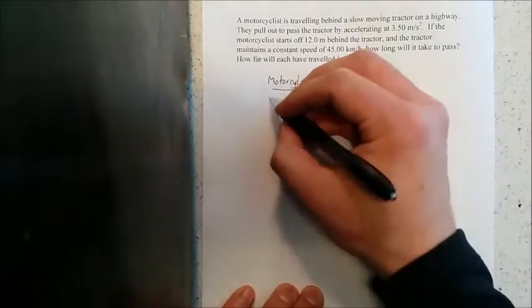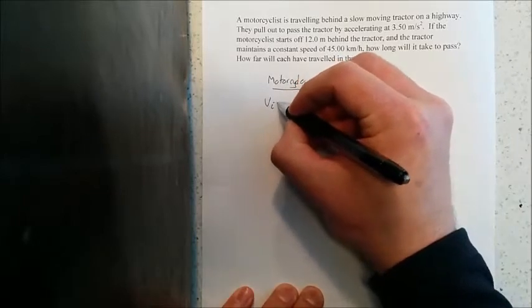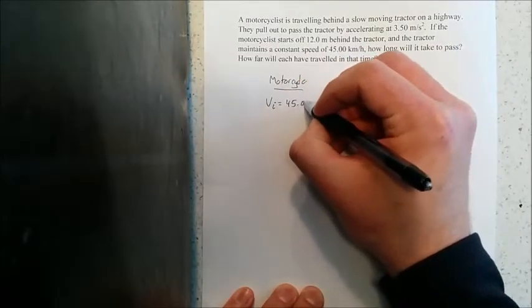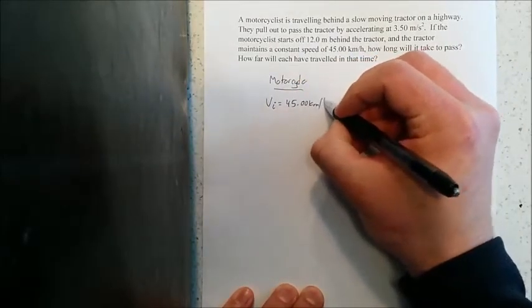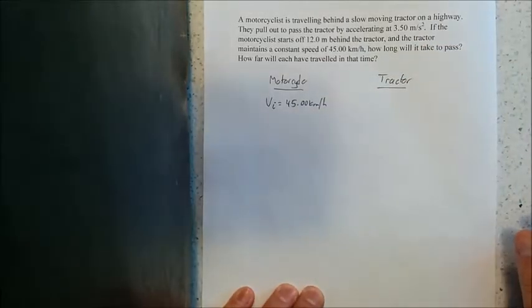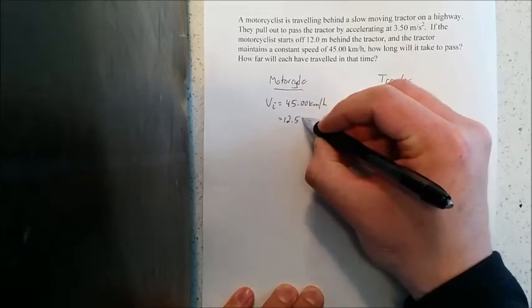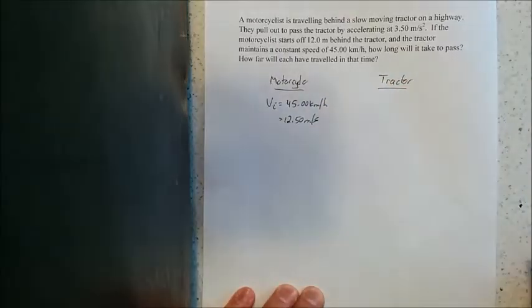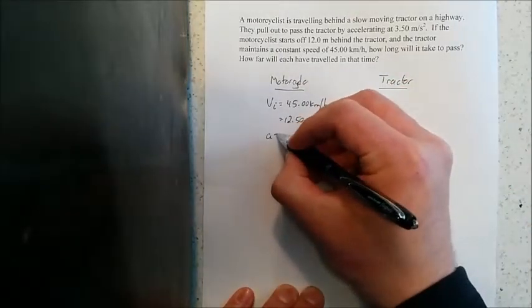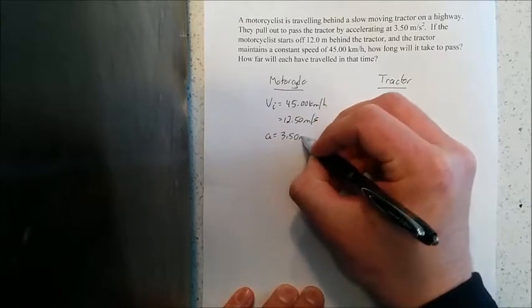So the motorcycle as a vehicle that's experiencing acceleration, its initial speed is 45.00 kilometers per hour and it's usually best just to go to meters per second. So we convert that over as 12.50 meters per second and we have an acceleration value of 3.50 meters per second squared.